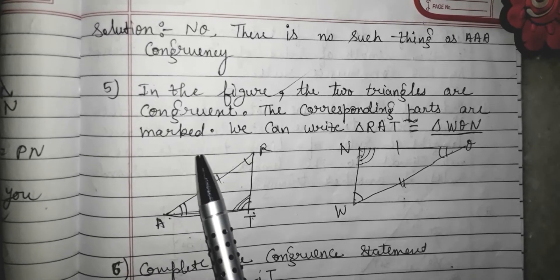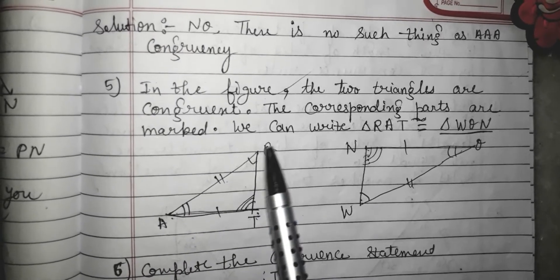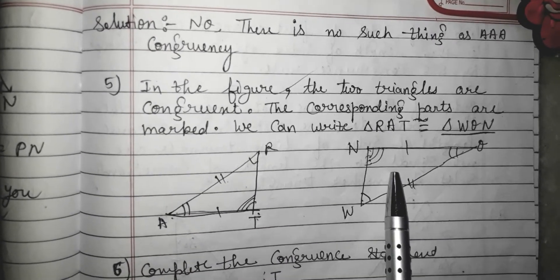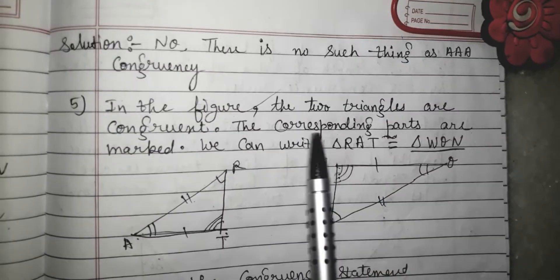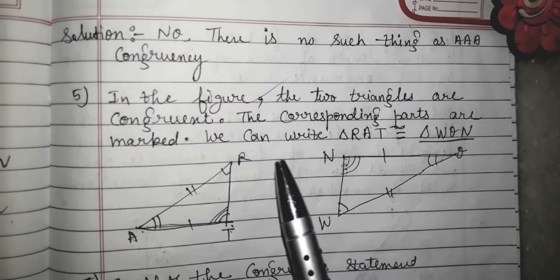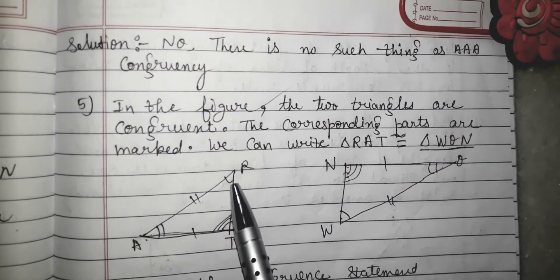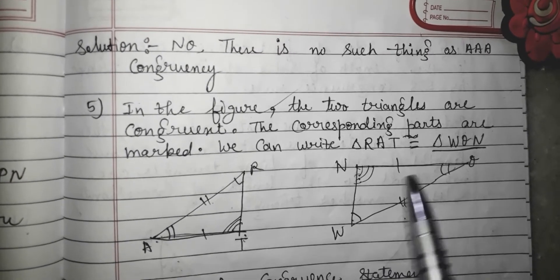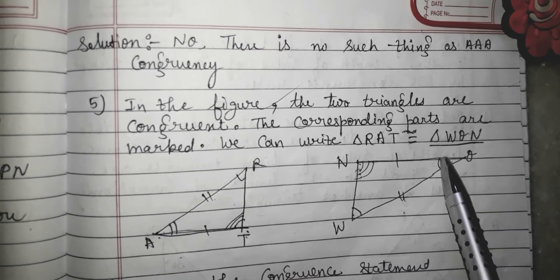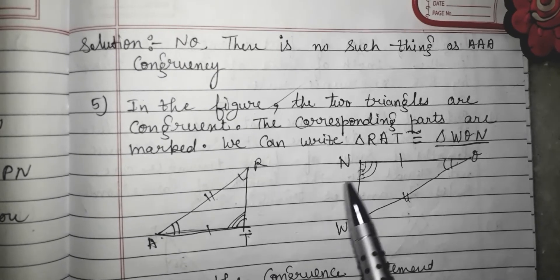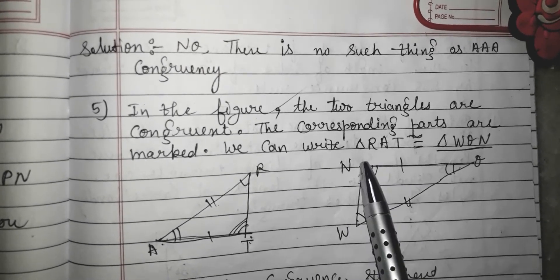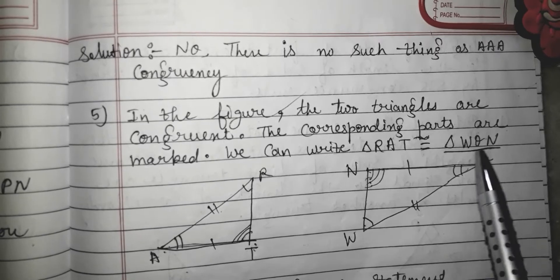Today, in this figure, the two triangles are congruent — that is given. The corresponding parts are marked. Corresponding means: angle R is equal to angle W, angle A is equal to angle Q, and angle T is equal to angle N. So, we can write that triangle RAT is congruent to which triangle?